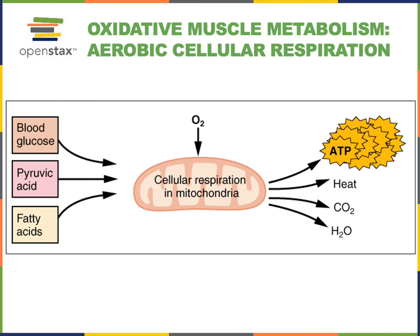If muscle fibers do have sufficient oxygen availability, pyruvic acid from glycolysis can then enter the mitochondria. The mitochondria will perform aerobic cellular respiration, using oxygen to break down the pyruvic acid, producing the waste products of carbon dioxide and water, and generating a large amount of ATP that can be used to fuel muscle activity.